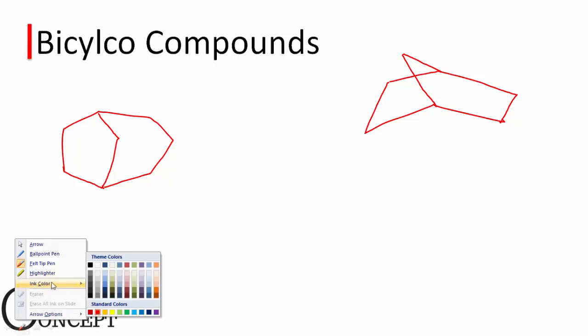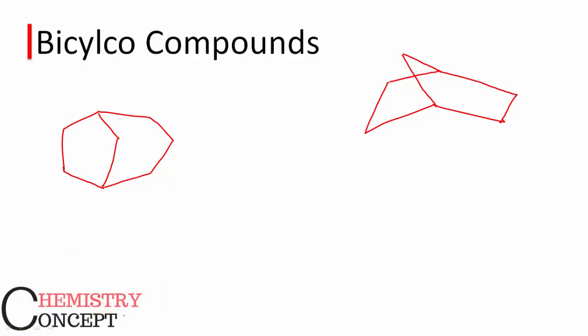There is a special thing: in a bicyclo compound, as the name suggests, there are two different rings fused together, because of which three different parts of a bicyclo compound are generated.